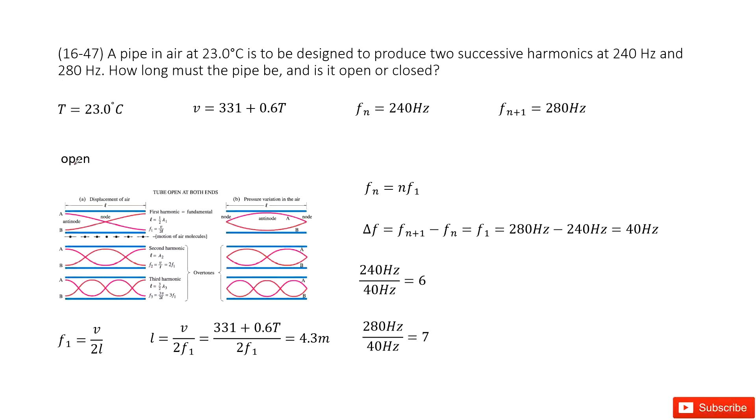First, we can consider if this pipe is open. We look at the picture in our textbook for a tube open at both ends. From this we can get the function: the fundamental frequency f1 is v over 2L, and fn equals n times f1.